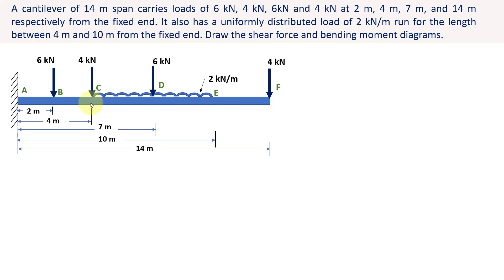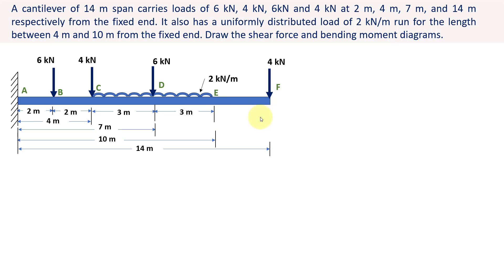Now let us find the distance between these individual points. Between B and C it is 4 minus 2, which is 2 meters. Between C and D it is 7 minus 4, which is 3 meters. And between D and E it is 10 minus 7, which is 3 meters.